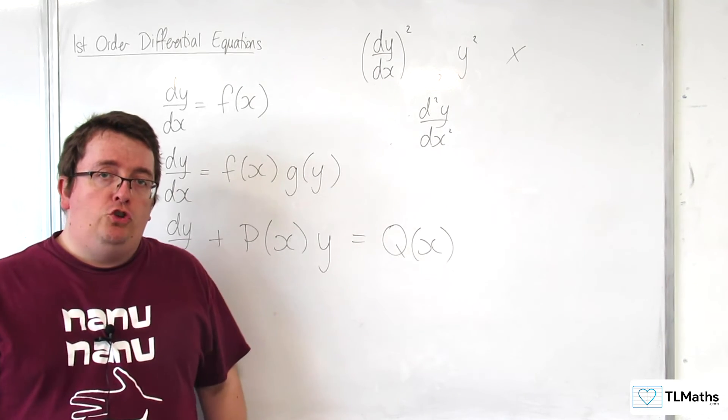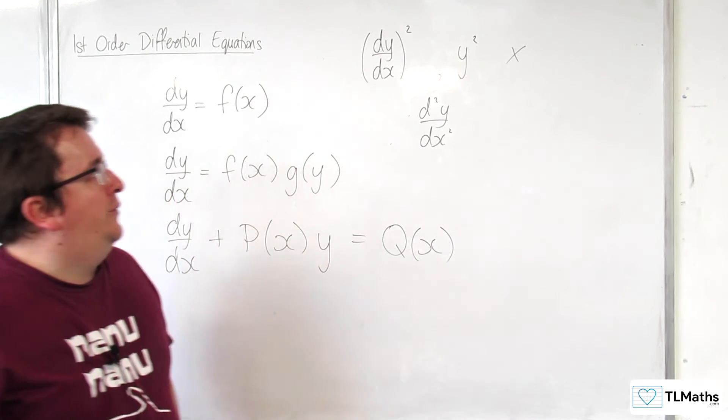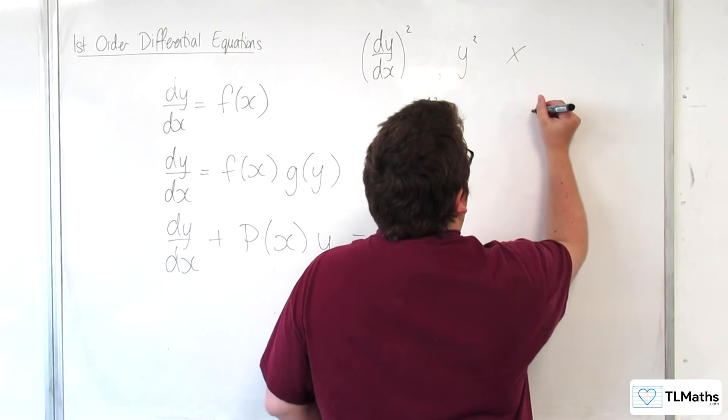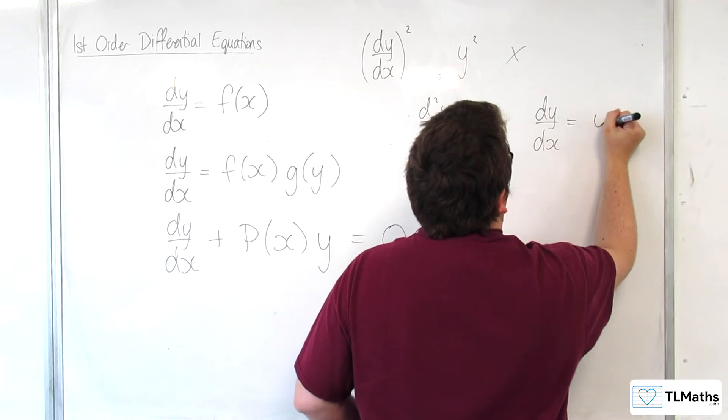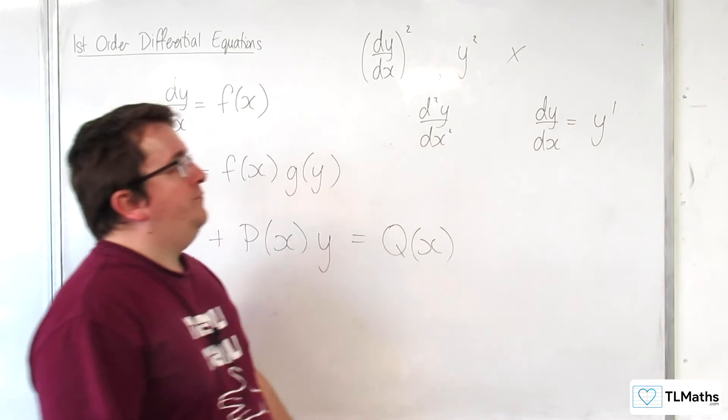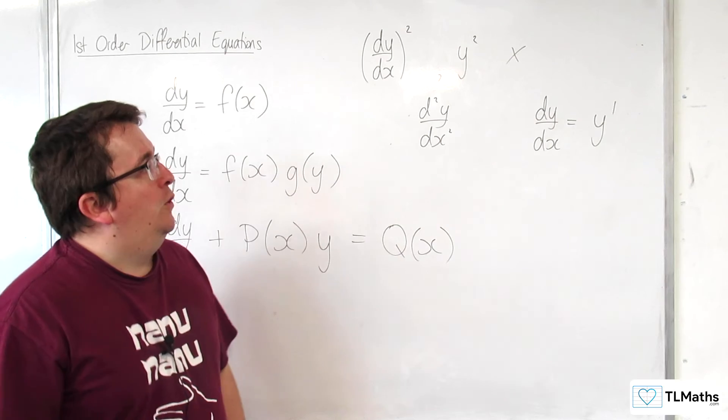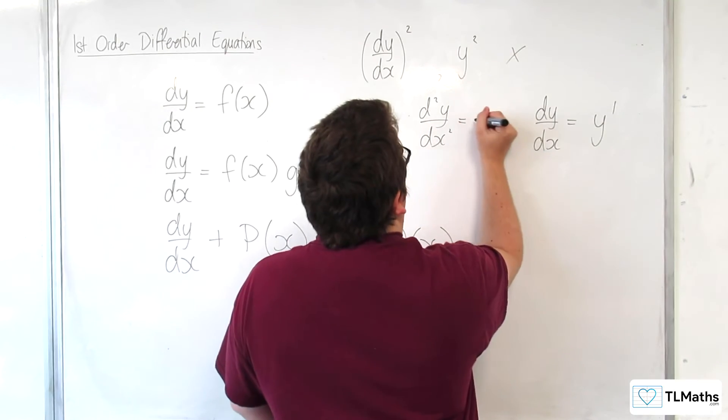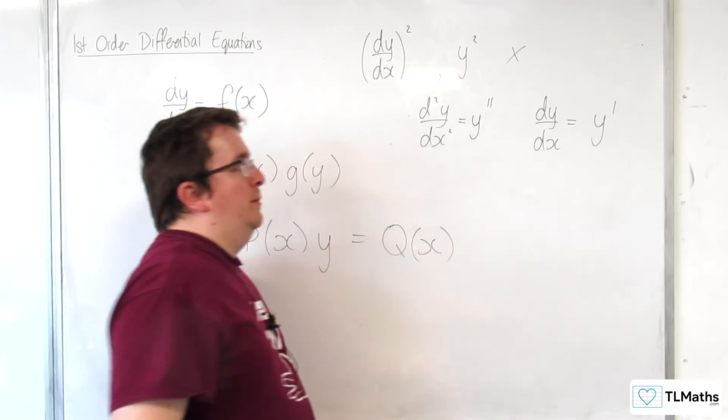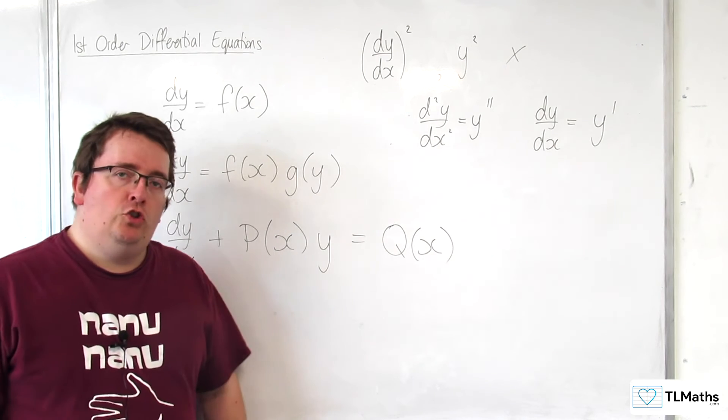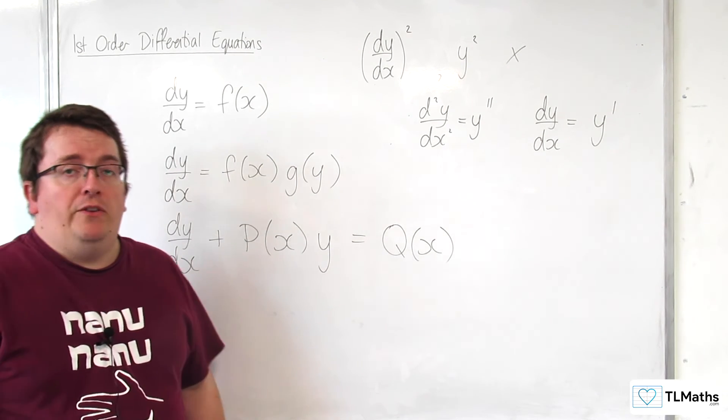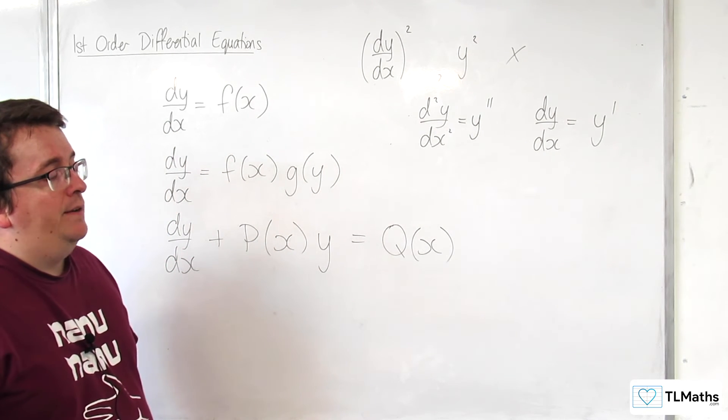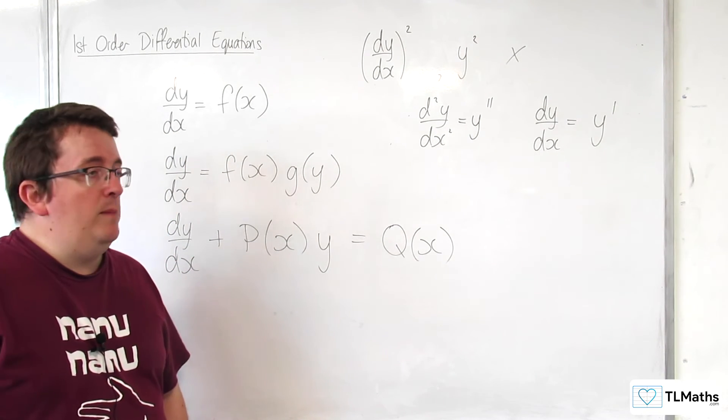Other bits of notation that you should be aware of is that you may see that dy by dx is abbreviated to y prime. So, d2y by dx squared would be y double prime or double dash. So that is one thing that you might see in textbooks and exam papers.